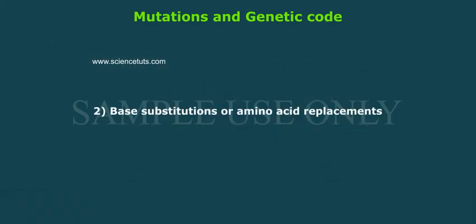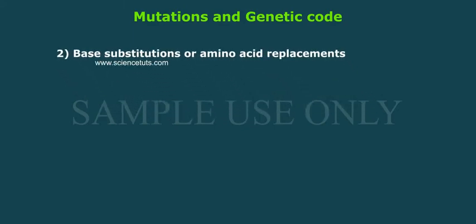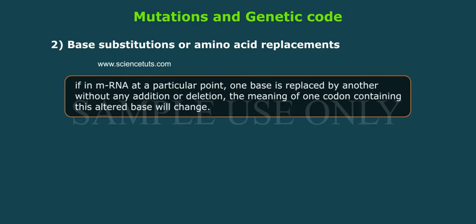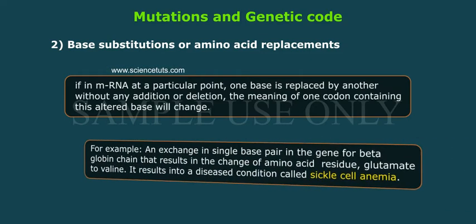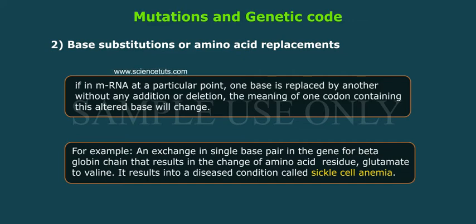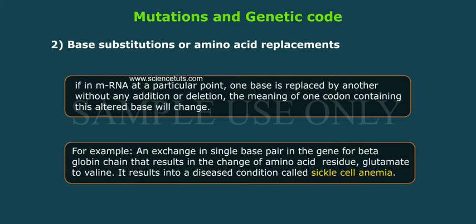Base substitutions or amino acid replacement: If, in mRNA, at a particular point, one base is replaced by another without any addition or deletion, the meaning of one codon containing this altered base will change. For example, an exchange in a single base pair in the gene for the beta-globin chain results in the change of amino acid residue glutamate to valine. This results in a diseased condition called sickle cell anemia.